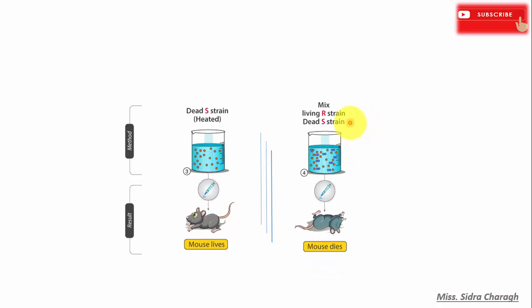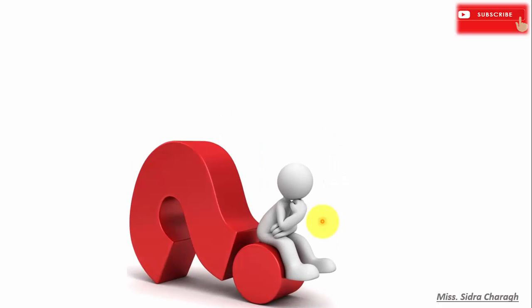However, when cells of heat-killed smooth strain were mixed with R strain and injected into mice, the mice died. This result was surprising.